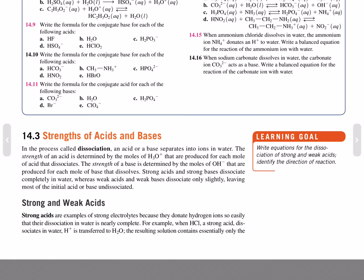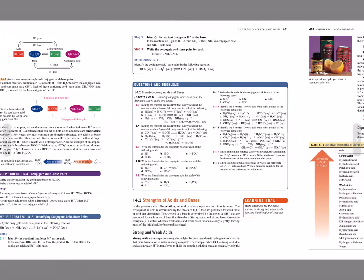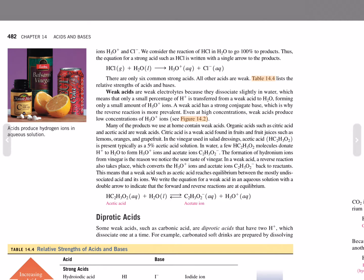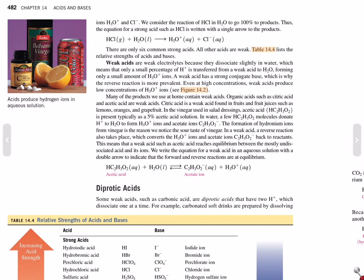Strong acids are examples of strong electrolytes because they donate hydrogen ions so easily that their dissociation in water is nearly complete. For example, when hydrochloric acid, a strong acid, dissociates in water, protons are transferred to the water until the resulting solution contains essentially only ions of hydronium and chloride. We consider the reaction of hydrochloric acid in water to go to 100% of products. Thus, the equation for a strong acid such as hydrochloric acid is written with a single arrow to the products.